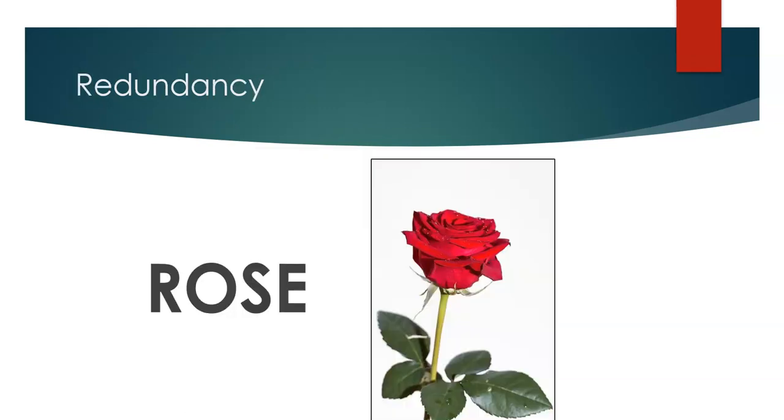This is a rose. This is also an example of redundancy. Redundancy is giving the same information through multiple modes. So, for example, when I told you that this is a rose, that was audio information. You also have an image that is easily recognizable as a rose, in addition to the word rose. So I gave you that information in three different modalities.